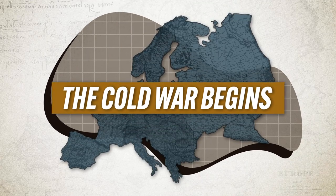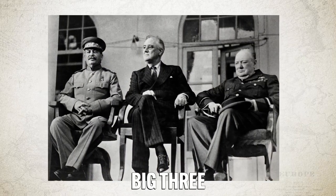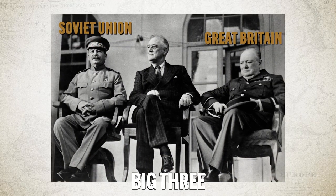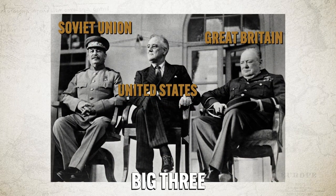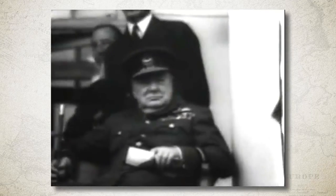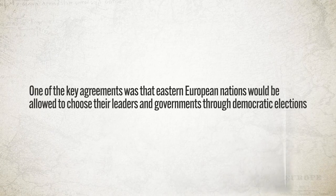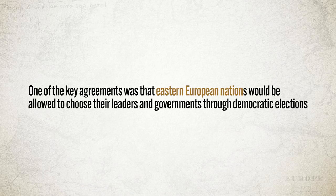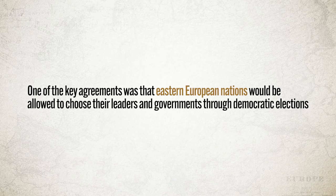After the cataclysmic death and destruction of World War II, everyone wanted to return to normalcy. But even before the war ended, a new tension was brewing between the United States and the Soviet Union. Near the end of the war, the Big Three — Great Britain, the Soviet Union, and the United States — met in a series of three conferences where they negotiated what a post-war Europe would look like.